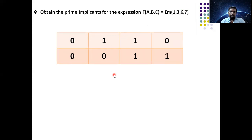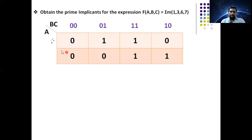Draw the separator. Assign the first input A and the remaining two inputs per column. So 00 will be here, 01 will be here, 11 will be here, and 10 will be here. Now verify: octet is not possible since we don't have eight ones. Go for quad — four ones are there, but all four ones are not adjacent to each other, so quad is not possible. Go for pairs.